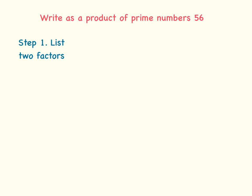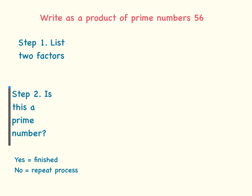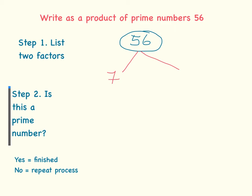One last example: write as a product of prime numbers the number 56. Let's remember our two steps — step one: list two factors; step two: ask if it's a prime number; if yes, we're finished; if no, repeat. I'll draw a circle at the top, put 56 in it, then follow step one: two factors of 56 — the first coming to mind is 7 times 8.